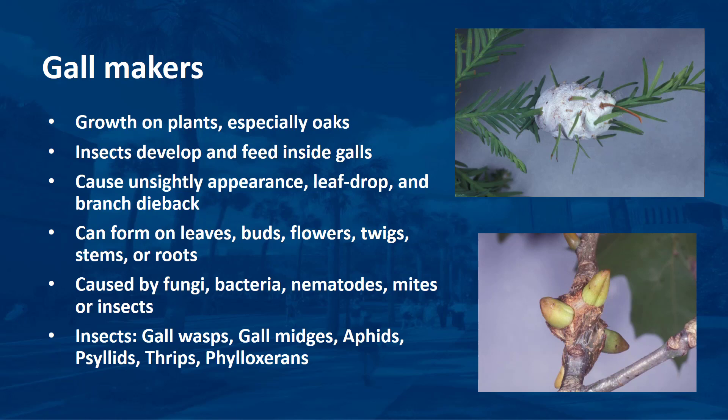Galls are growths on plants, and you may often find them on oak trees. Insects develop and feed inside galls, forming the gall. They can cause an unsightly appearance to plants, leaf drop, and branch dieback. Galls can form on leaves, buds, flowers, twigs, stems, or roots. Depending on the kind of gall, they may range in size from slight swellings to large growths the size of golf balls or baseballs. Fungi, bacteria, nematodes, mites, or insects may cause galls. Insects that most commonly cause galls are gall wasps, gall midges, aphids, psyllids, thrips, and phylloxerans.